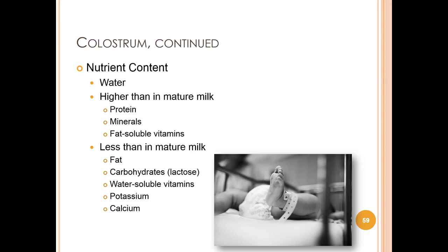The swift increase in milk volume parallels a newborn's increasing stomach capacity. Colostrum contains water, protein, fat, carbohydrates in the form of lactose, minerals, and many vitamins. It is higher in protein, fat-soluble vitamins, and certain minerals such as sodium, potassium, zinc, and chloride. It contains less fat and lactose than mature milk.